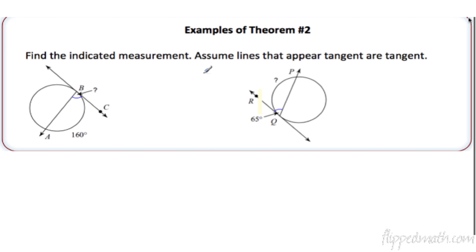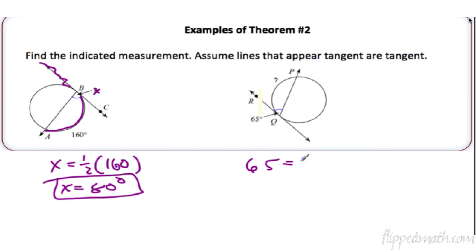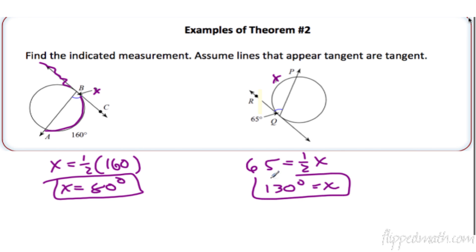Find the indicated measurement — assume lines that appear tangent are tangent. We have a tangent and a secant, and the intercepted arc is 160. So x equals half of 160, which is 80. That simple. Next example is just working backwards: if 65 is half of x, multiply both sides by 2 — x equals 130 degrees.